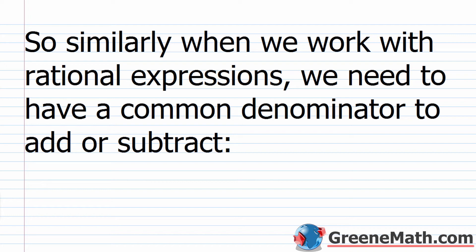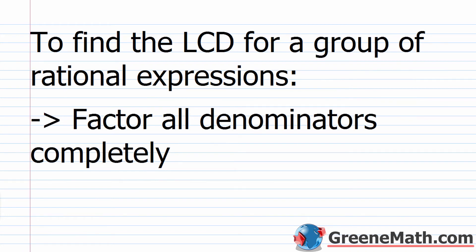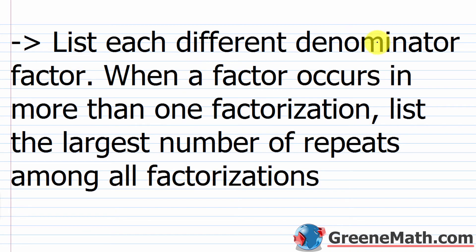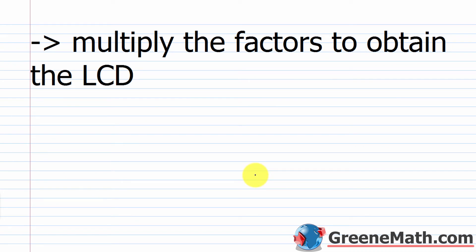Similarly, when we work with rational expressions, we need a common denominator to add or subtract — it's the same process, just messier because we have variables involved. To find the LCD for a group of rational expressions: factor all denominators completely, then list each different denominator factor. When a factor occurs in more than one factorization, list the largest number of repeats among all factorizations. Then multiply the factors to obtain the LCD.